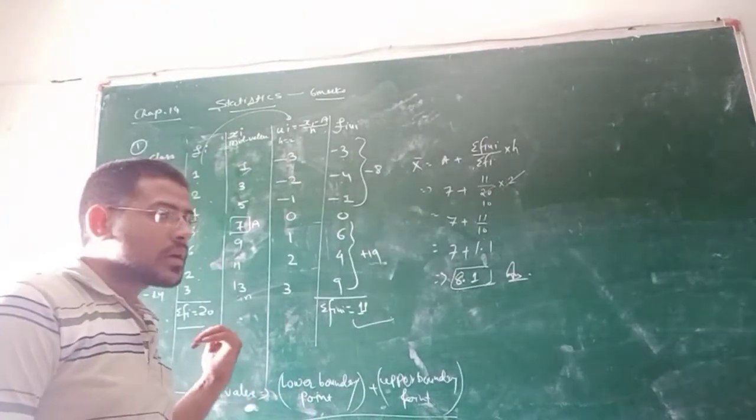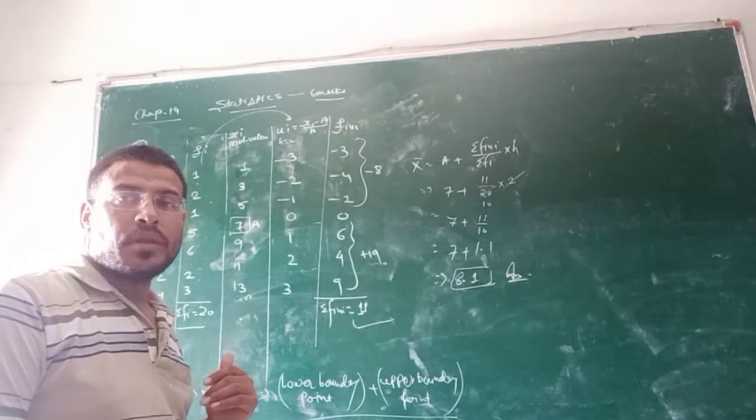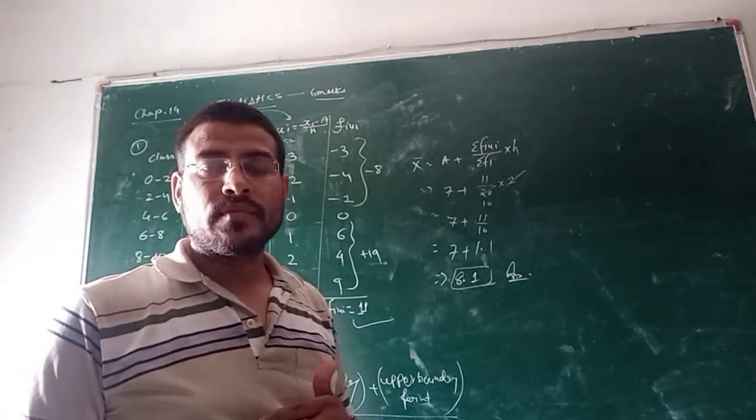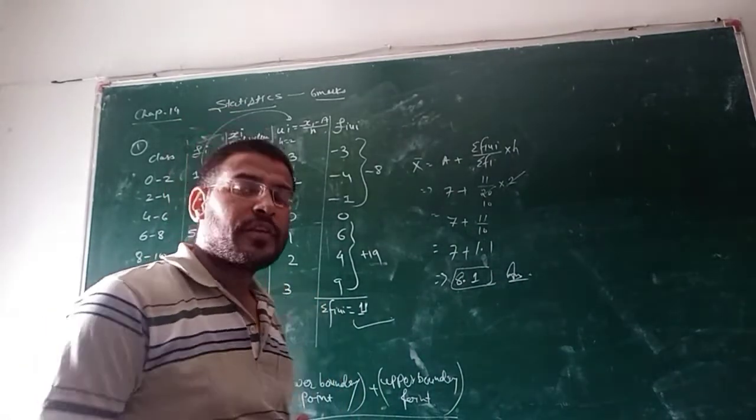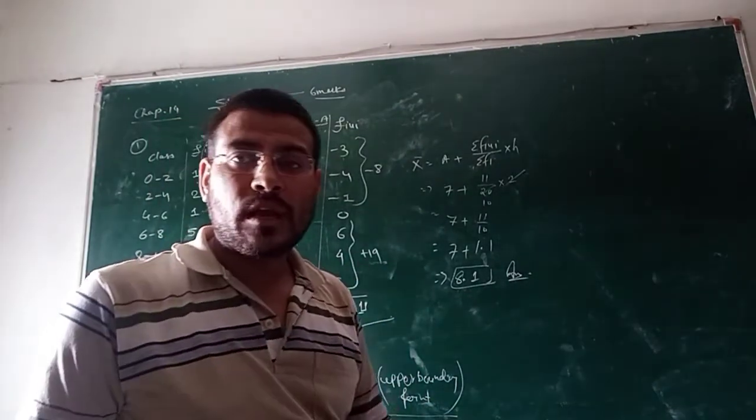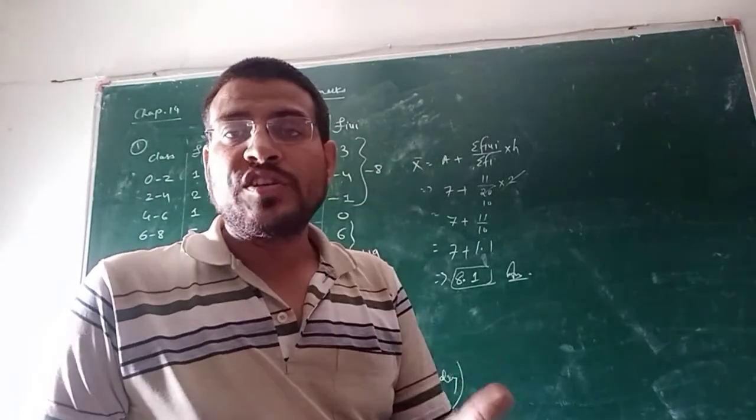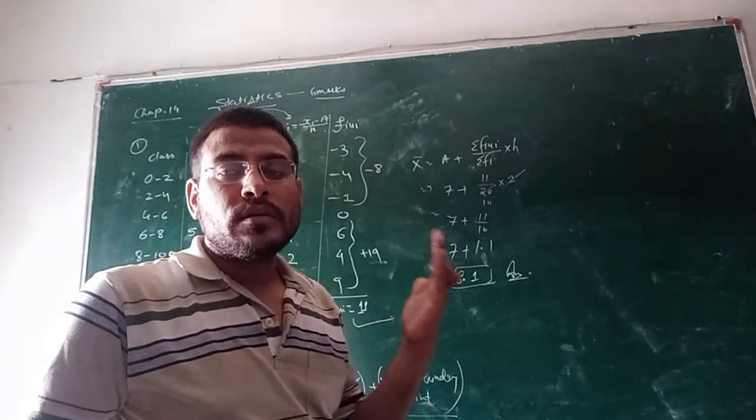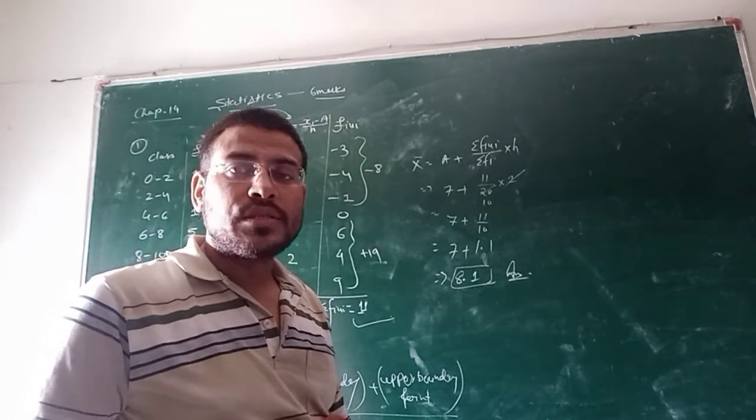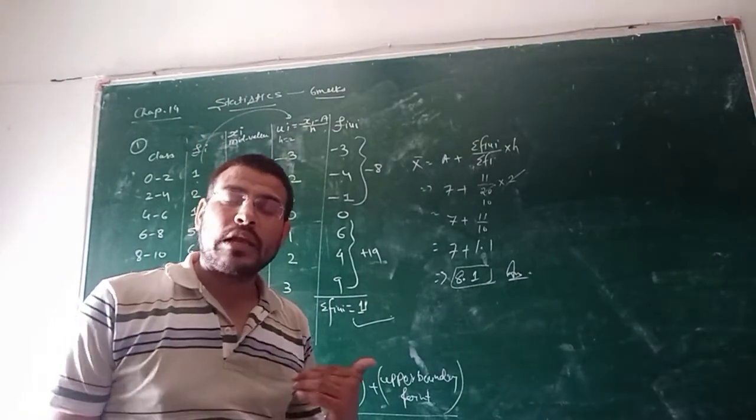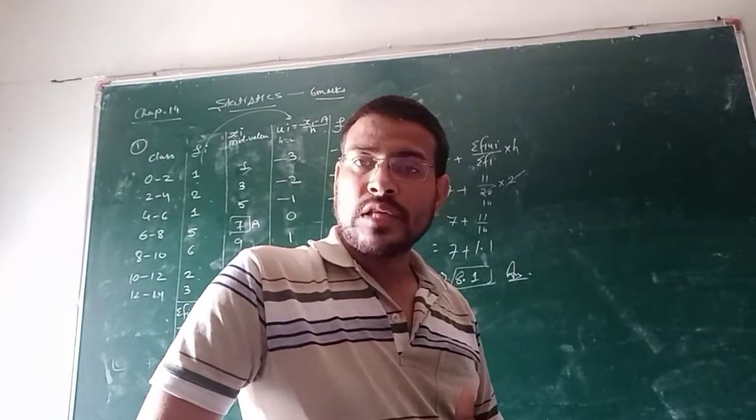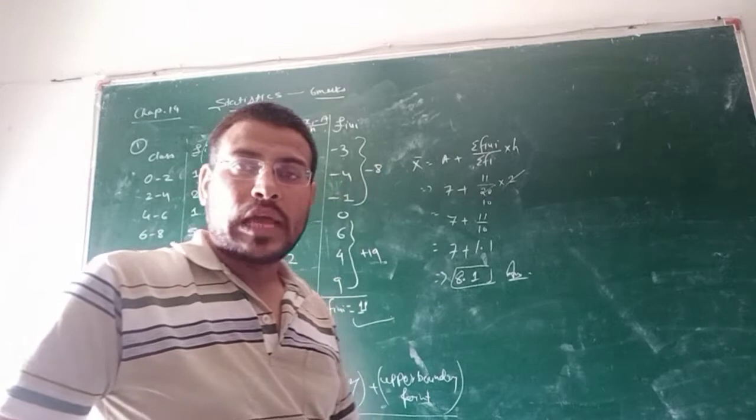Here, we have to see all of these three methods and then we have to decide by which method we should calculate. Now, when your class is equal at every level, at that time you can use any of the methods, your answer will be same. And if it is not specified, that either you calculate with direct method or deviation method or assumed mean method, in such cases you have the right to calculate by any of the methods. The answer will always be the same.